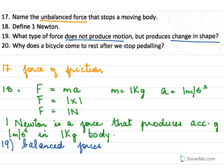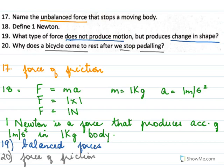Why does a bicycle come to rest after we stop pedaling? This is because of the force of friction. The force of friction acts in the opposite direction — it opposes motion.